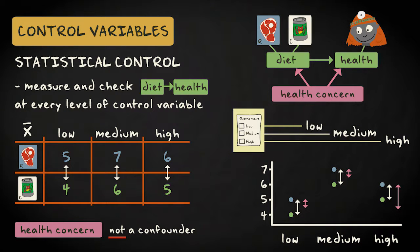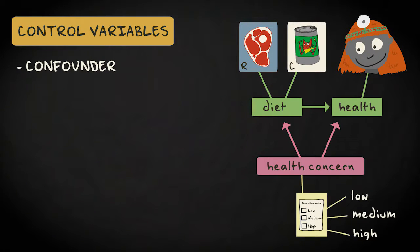If the difference in mean health rating between the raw meat and canned food group changes or disappears for one or more of the health concern levels, then there are three possibilities. First, health concern is a true confounder, a common cause of both the independent and dependent variable, resulting in a spurious relation between diet and health that disappears once we take health concern into account.